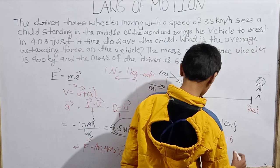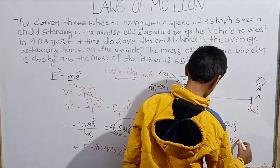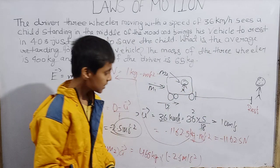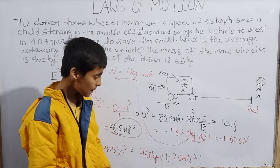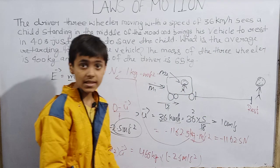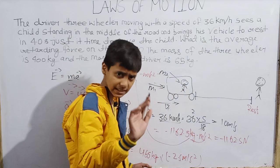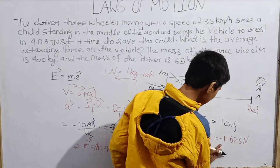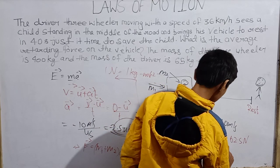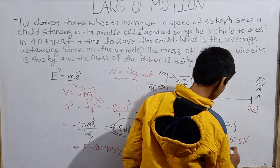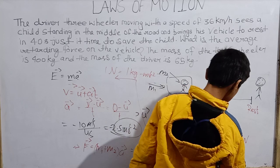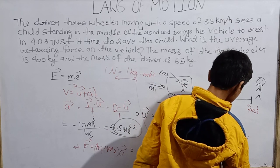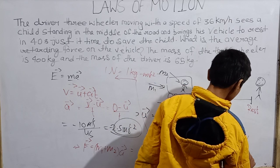Rounding off to significant figures, the answer is approximately −1200 N, which can also be written as −1.2 × 10³ Newtons. This is our answer in scientific notation.